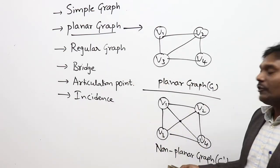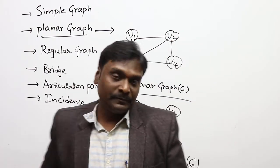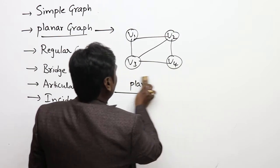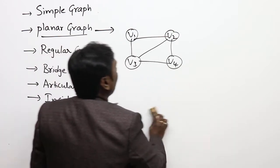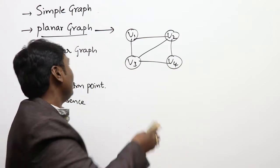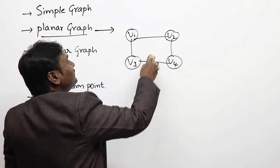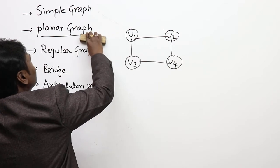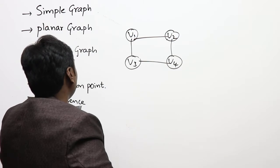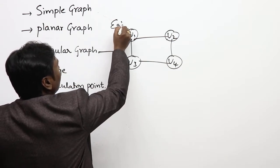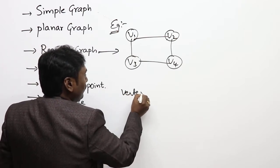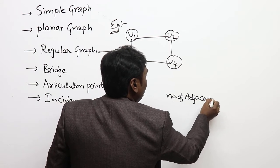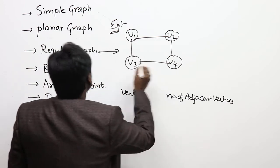The regular graph is defined as follows: every vertex must have the same number of adjacent vertices — that is called a regular graph. Let us take an example for a regular graph with vertices and their corresponding number of adjacent vertices.